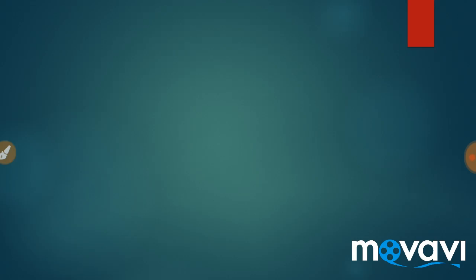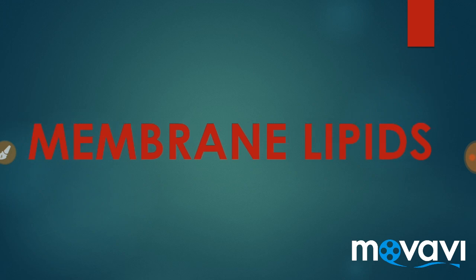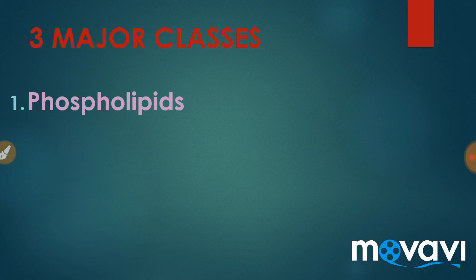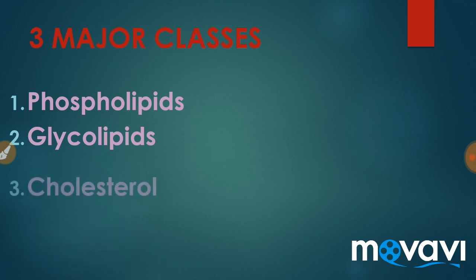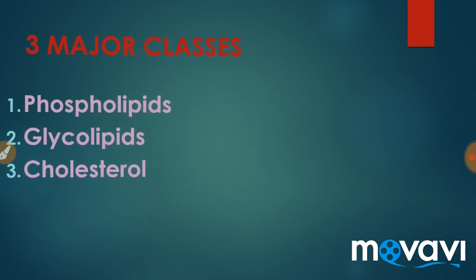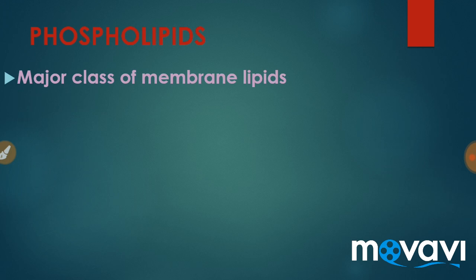Welcome friends. In this video I am going to talk about membrane lipids — the type of lipids which are present in biomembranes, or cell membranes, or simply plasma membrane. There are basically 3 major classes of lipids. The first one is phospholipids — the lipids which contain phosphate groups. The second one is glycolipids — those containing a sugar moiety in them. The third one is sterols; cholesterol is one of them. So we are going to start with phospholipids, which is the major class of membrane lipids.